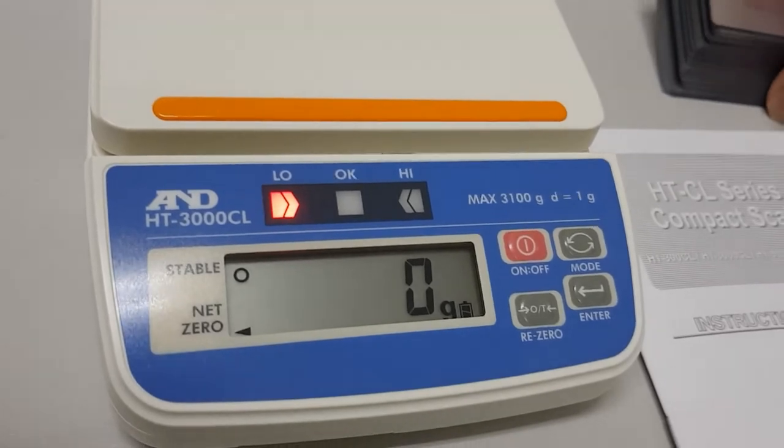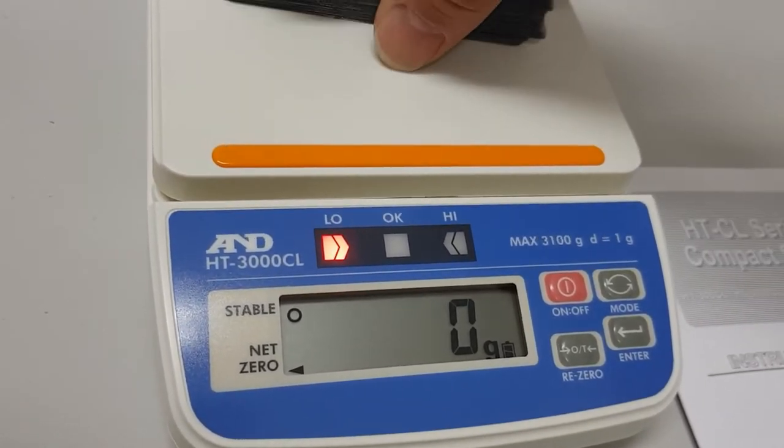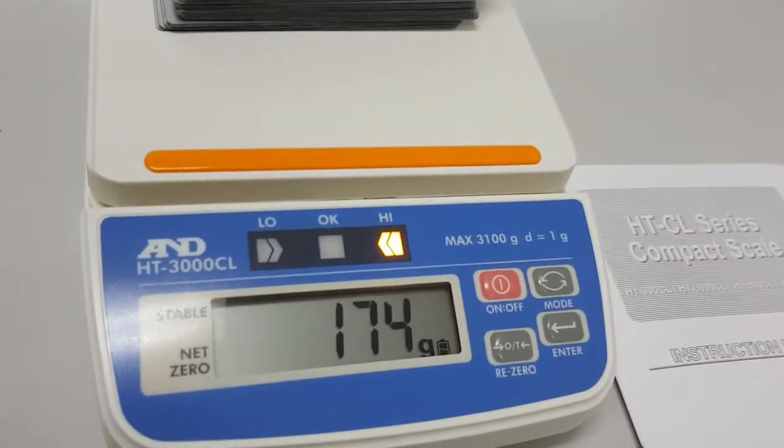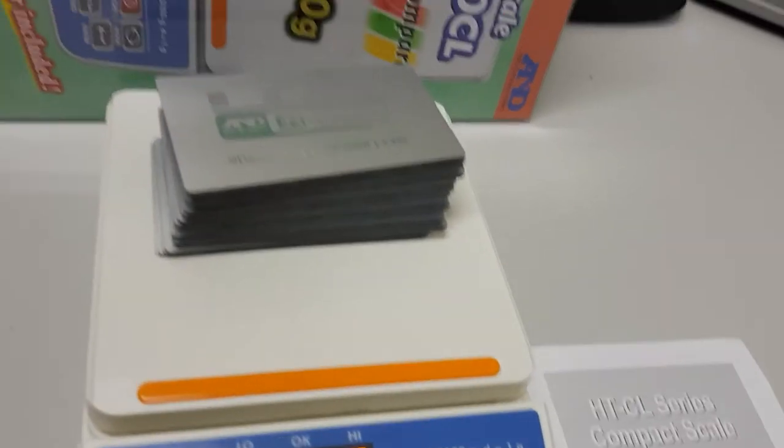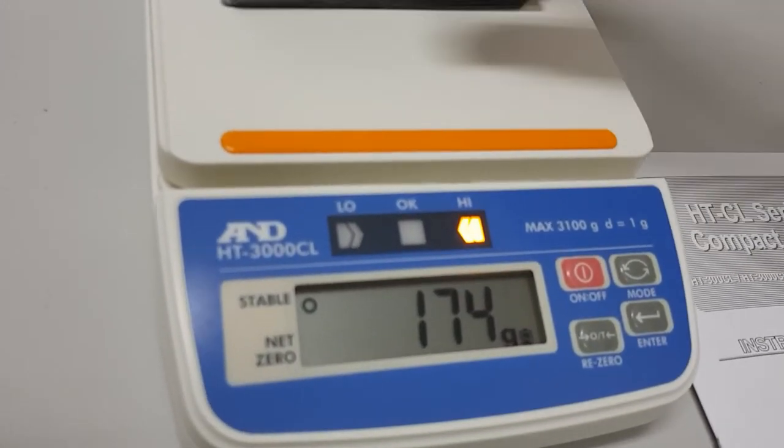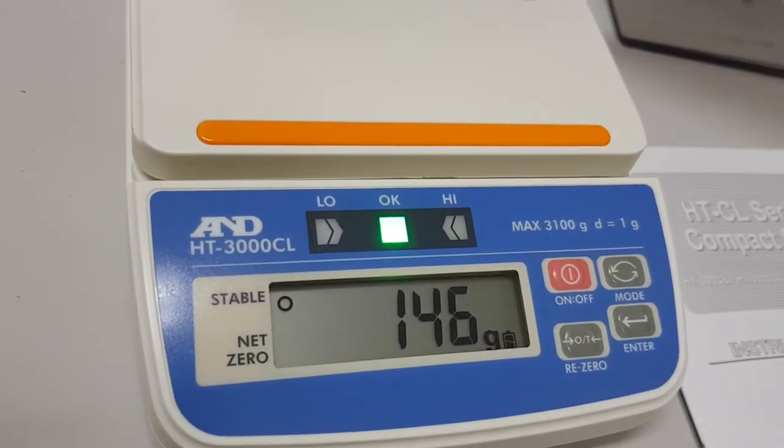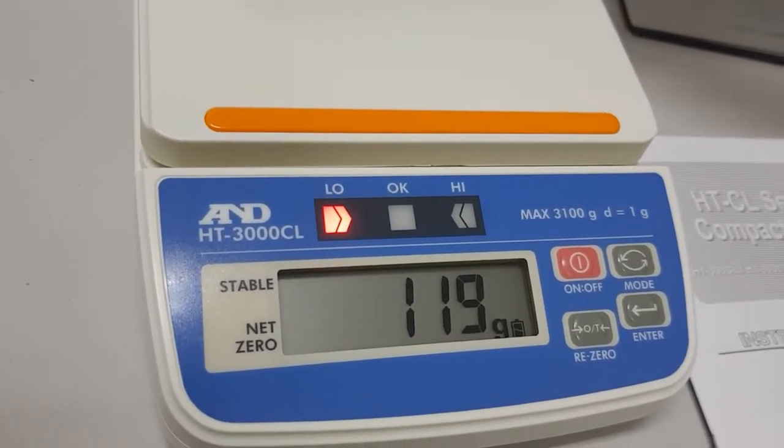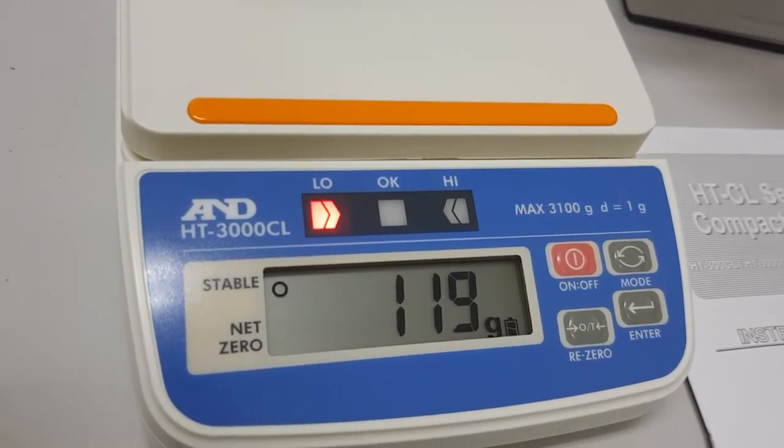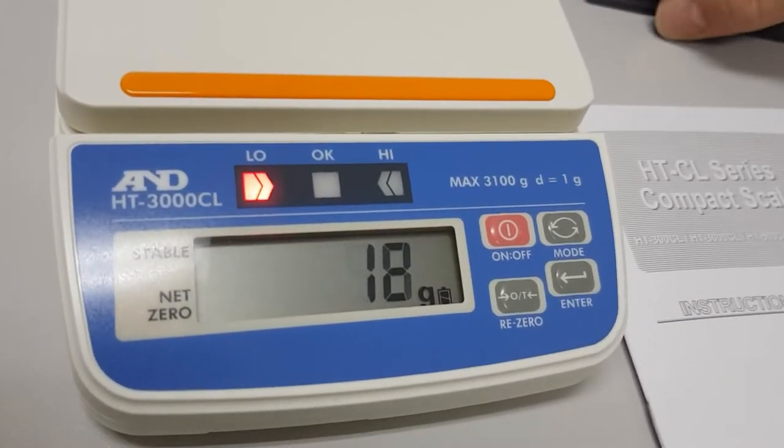At the moment I believe it's set for 125 to 150 grams in memory number one. Obviously that big pile of business cards is way too much. If we take them away we come down under 150, it'll show green. And if we go down under 125 it'll show low.